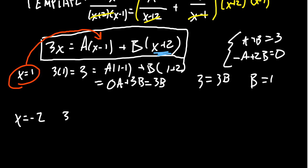3 times negative 2 is equal to negative 6. That's the left-hand side. Don't forget it. On the right-hand side, we get A times (-2-1). And then we're going to get B times (-2+2).